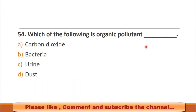Question number 54: Which of the following is an organic pollutant? Choices: a) carbon dioxide, b) bacteria, c) urine, d) dust. These are all inorganic compounds except urine, so the right choice is c) urine.